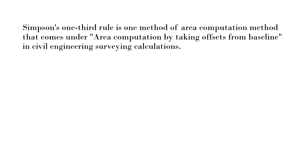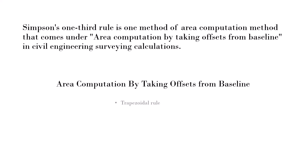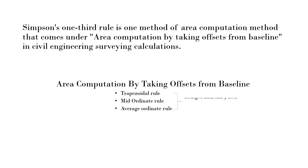Simpson's one-third rule is one method of area computation that comes under area computation by taking offsets from the baseline in civil engineering surveying calculations. Other methods in this category are the mid-ordinate rule, the trapezoidal rule, and the average ordinate rule. All these methods are employed when the boundary line is nearly straight. When the boundary line is curved or slightly deviates from a straight line, we employ Simpson's one-third rule.